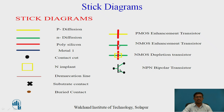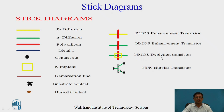Summary of color codes for stick diagrams: P-diffusion — yellow; N-diffusion — green; polysilicon — orange or red; metal 1 — blue; metal contact — black; P-well and N-well demarcation line also shown. The symbols used are: PMOS enhancement transistor, NMOS transistor, and NMOS depletion transistor. These are the colors and symbols to use when drawing the stick diagram.